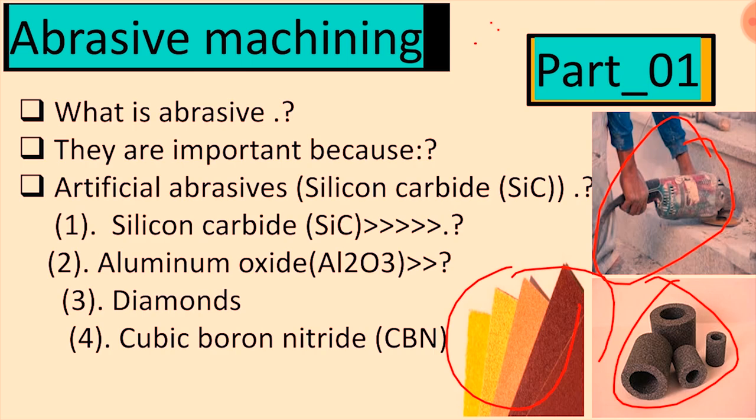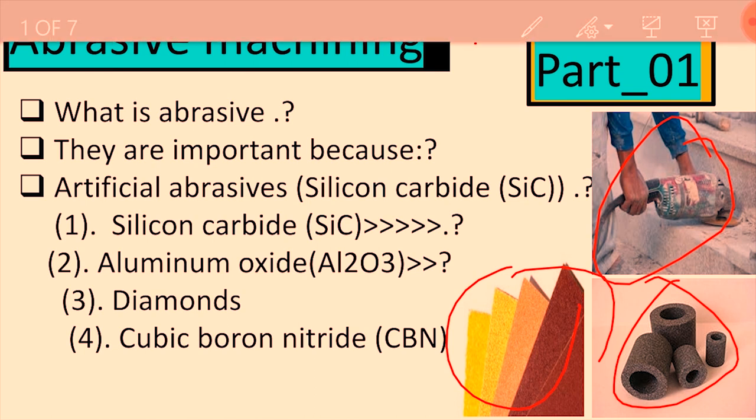So this was the first part covering what is abrasive, abrasive machining, the importance of abrasives, and artificial abrasives like silicon carbide, aluminum oxide, and diamond. In the next video, Part 2, we will cover abrasive machine processes like honing, superfinishing, and lapping. Thanks a lot.